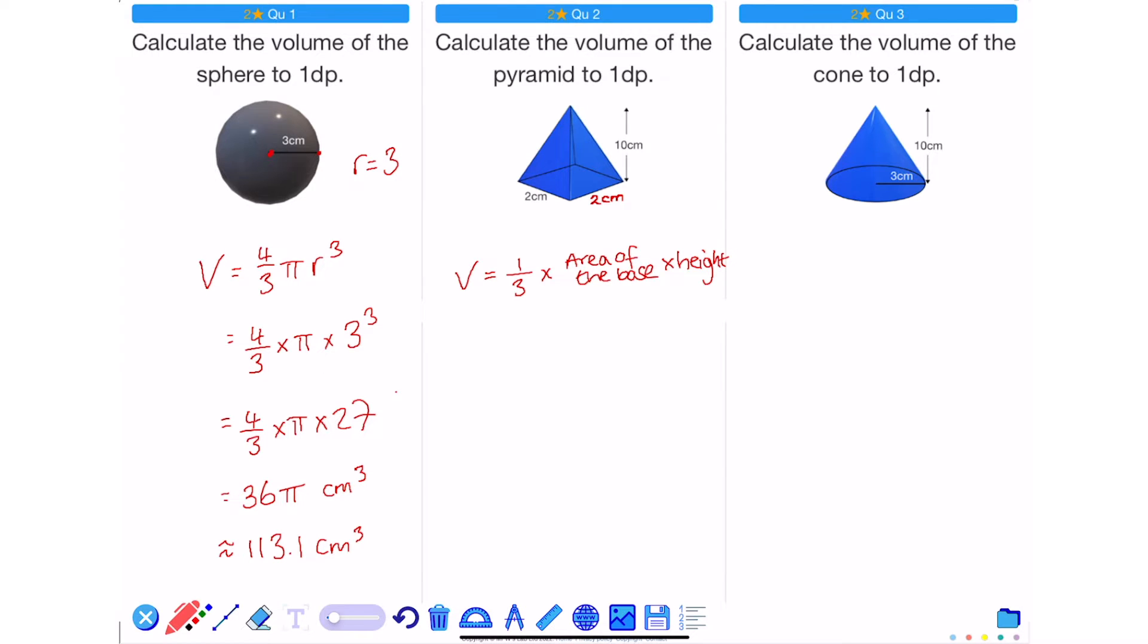The base in this case is a 2 by 2 square. So the area will be 2 times 2. The height is 10. And I'm finding a third of it. 2 times 2 is 4 times 10 is 40. And finding a third of it is 40 over 3 cm cubed. Rounding to one decimal place would give me 13.3 cm cubed.